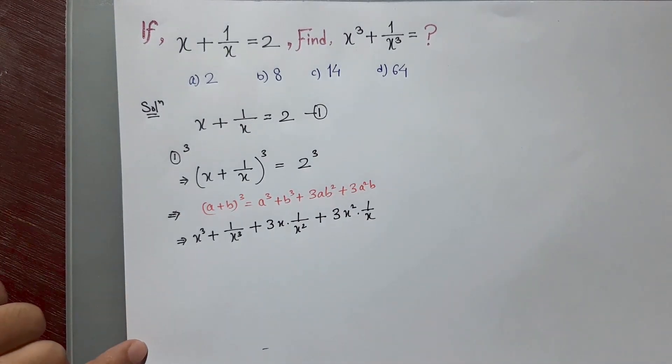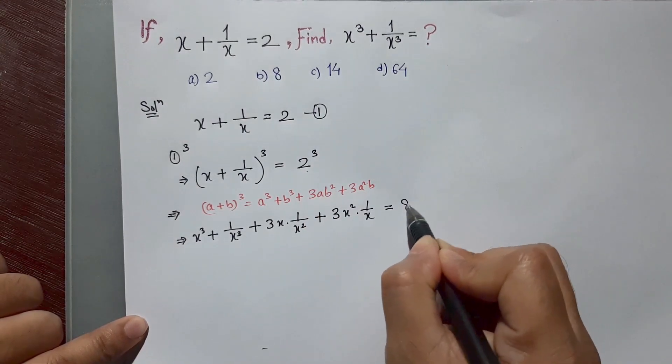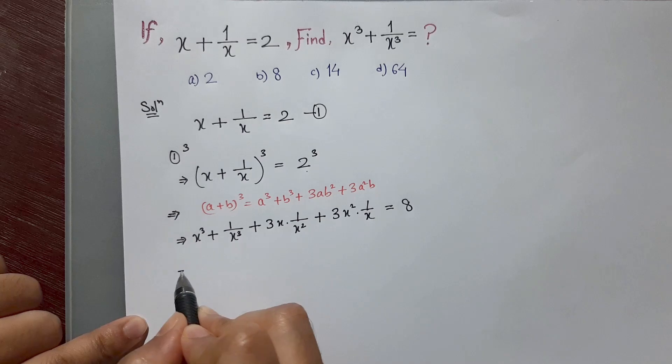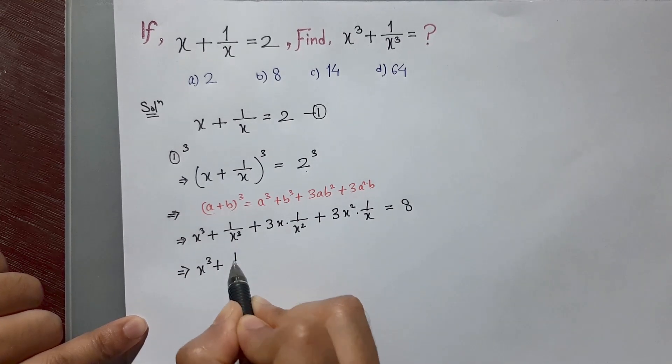And this side it will become 2 cube is 8. Okay, now let's write x cube plus 1 by x cube.